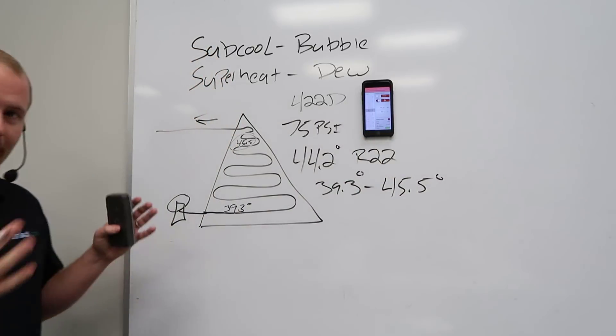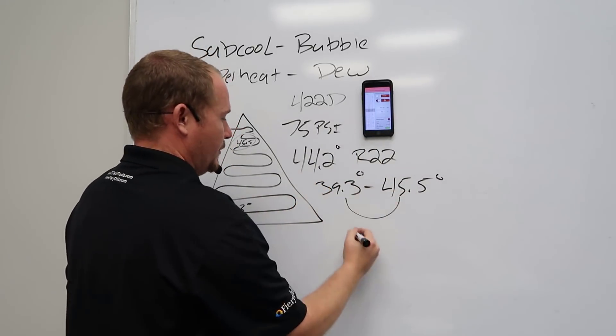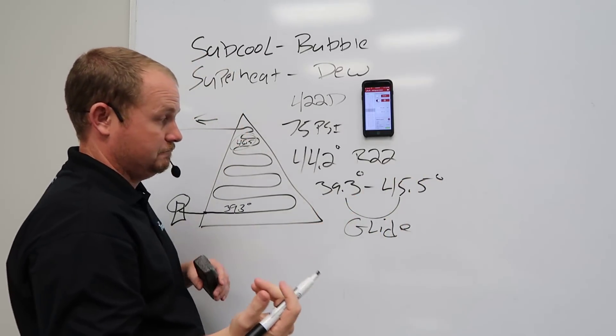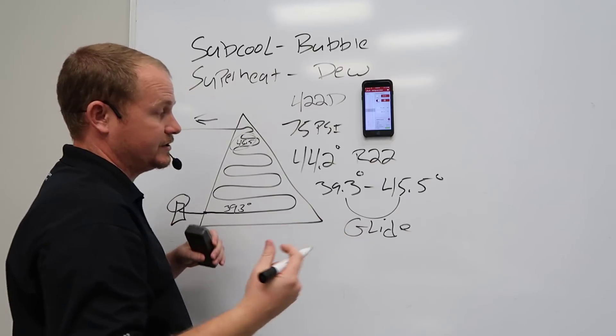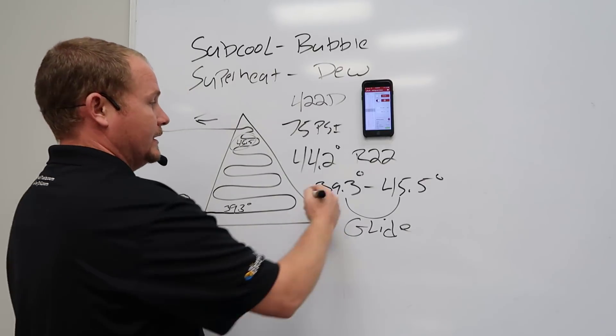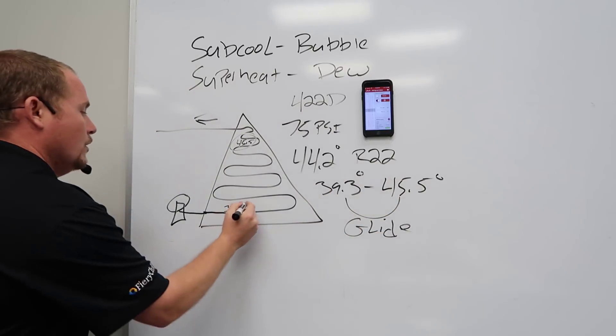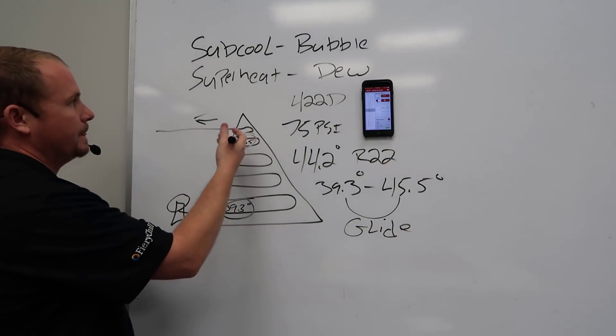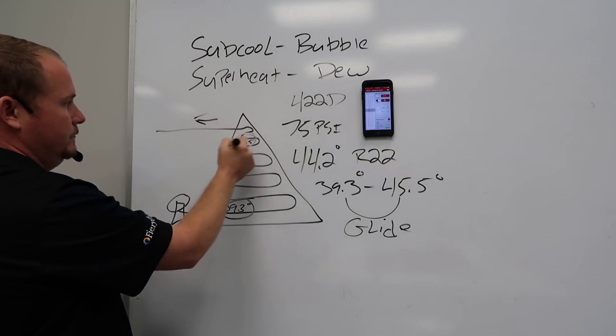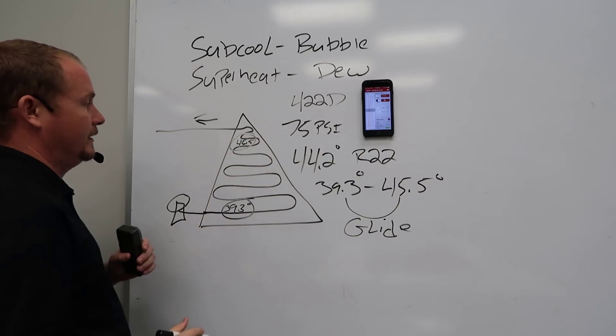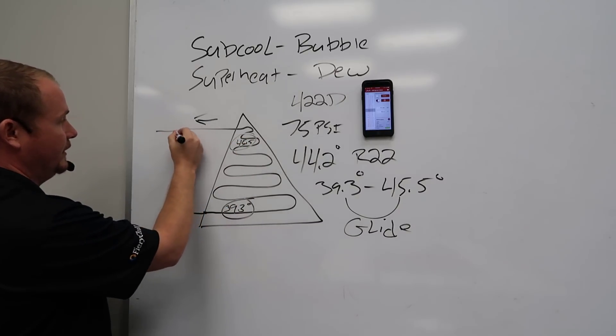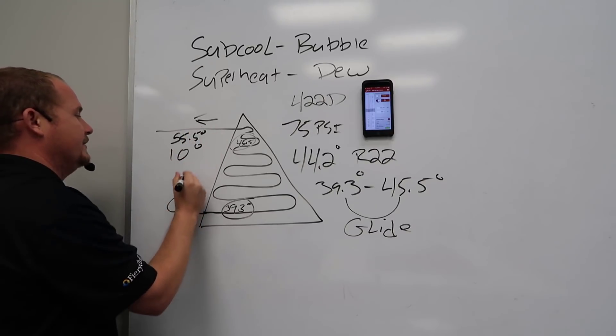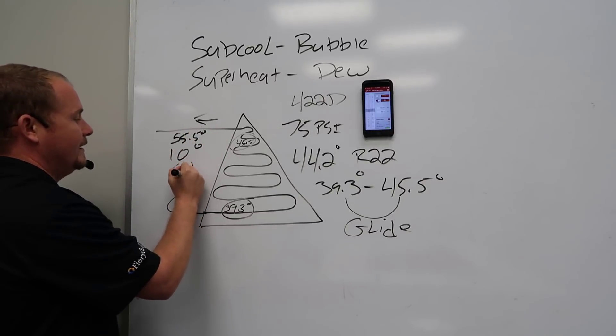So we have a range. This range is what we call glide. We have a glide of six degrees, slightly over six degrees. So that's our differential. Now when we're calculating superheat, we know that we use the dew. So this temperature here is what we use to calculate superheat. If our suction line temperature is 55.5 degrees, we would say that we have 10 degrees of superheat. And that is correct.